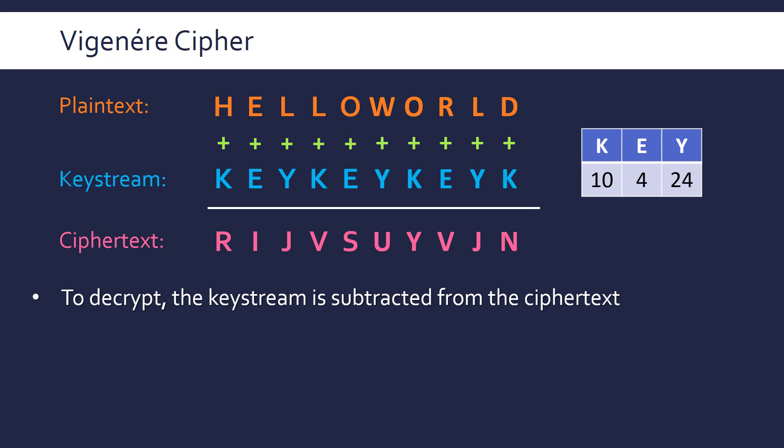To decrypt, we simply do the opposite process. When encrypting we add the key to the plain text, so to decrypt we subtract the key stream from the cipher text to get our plain text back. It's quite tedious but ultimately very simple to do.